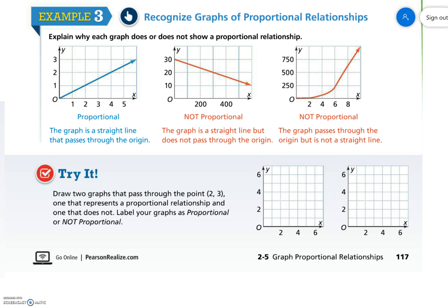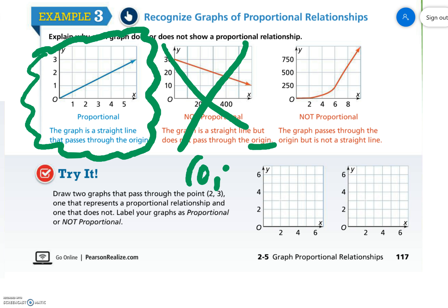Explain why each graph does or does not show a proportional relationship. So this first one is proportional because it is a straight line and it goes through the origin. The second one is not proportional. Even though it is a straight line, it does not go through the origin. Remember, the origin is the point (0,0).